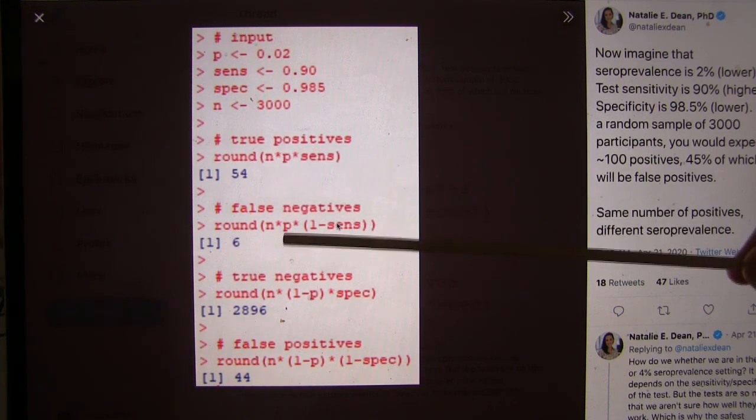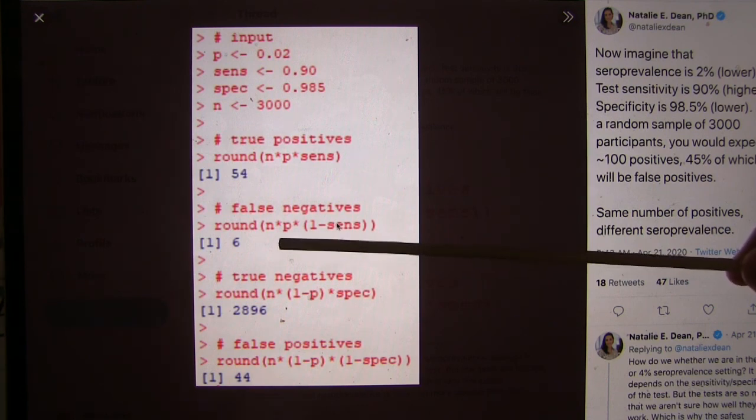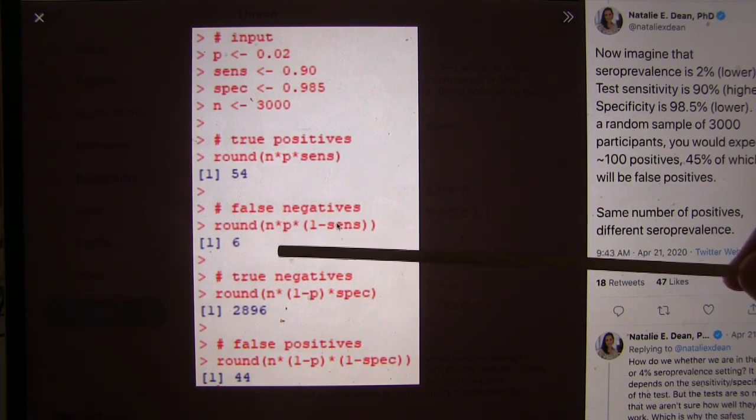Our false negatives, therefore, are 6, that's what's left over this one minus sensitivity. Yeah, so that's our 10% of the positives.